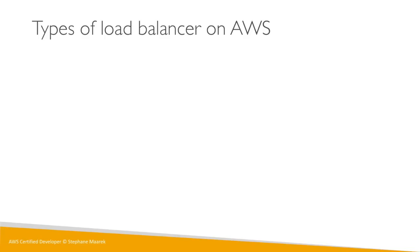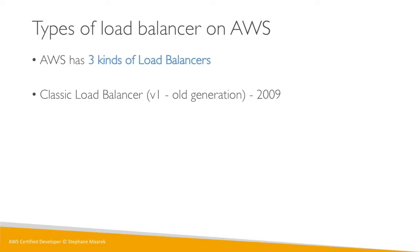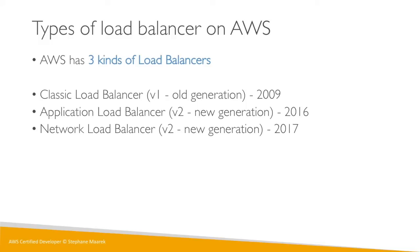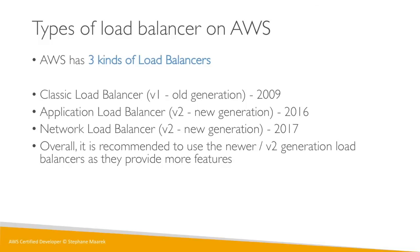There are different types of load balancers in AWS. There are three kinds: the Classic Load Balancer (CLB), v1 or old generation, created in 2009; the Application Load Balancer (ALB), v2 new generation from 2016; and the Network Load Balancer (NLB), also v2 new generation from 2017. Amazon now recommends using the newer v2 load balancers as they provide more features. The ALB and NLB are what will be asked mainly at the exam, although it's still important to know how a Classic Load Balancer works.